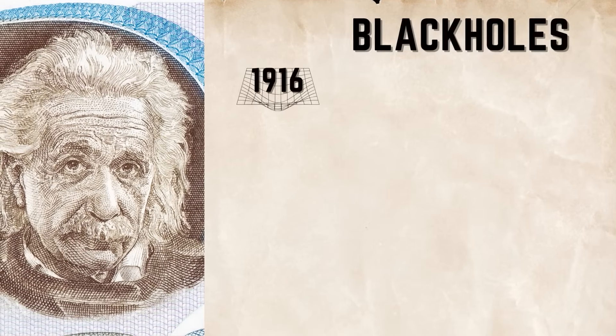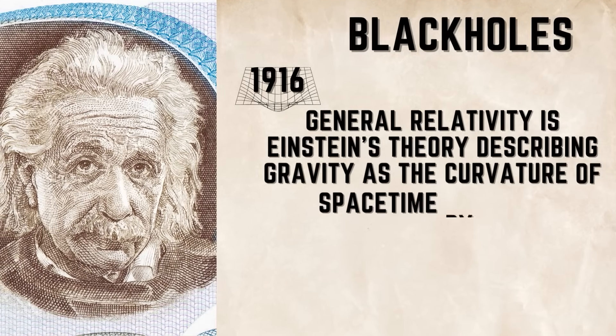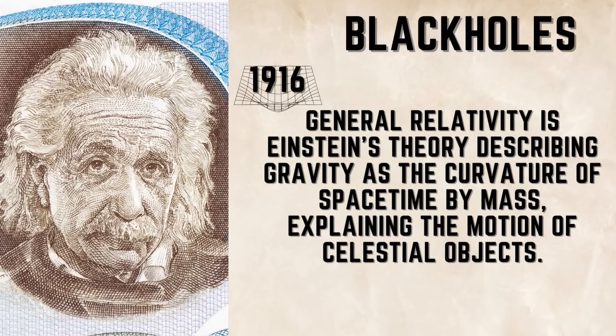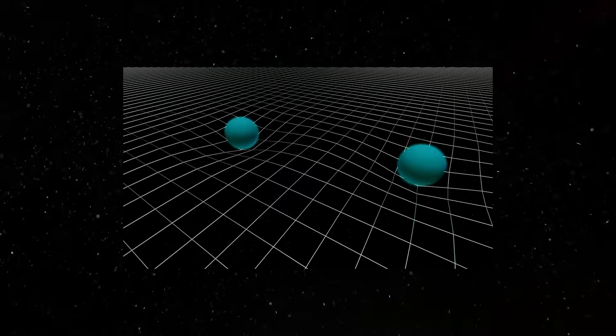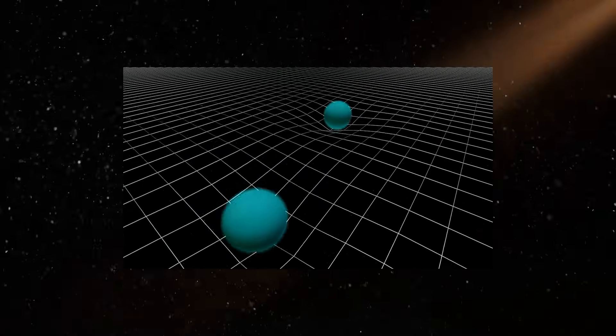Back in 1916, Albert Einstein first predicted the existence of black holes based on his theory of general relativity. His equations described how matter warps the fabric of space-time.